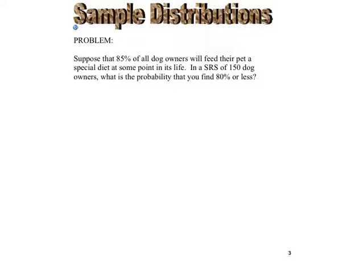What we're looking for is the probability that 80% or less is found. We also know n equals 150. We're looking for probability that x is less than or equal to 0.8.